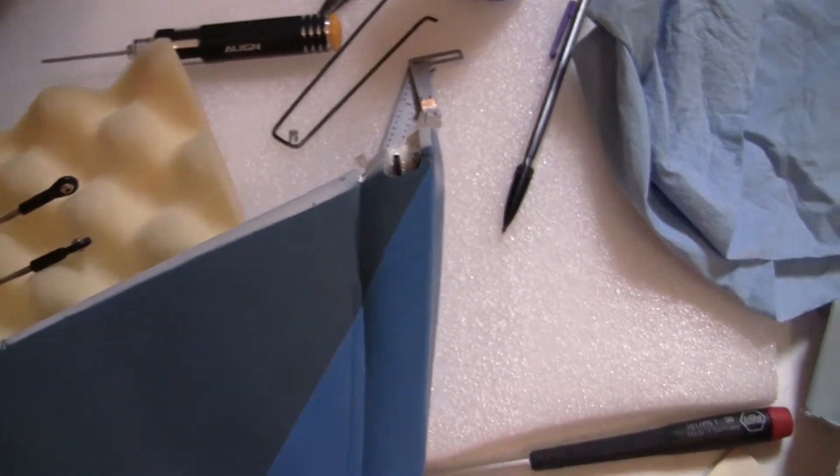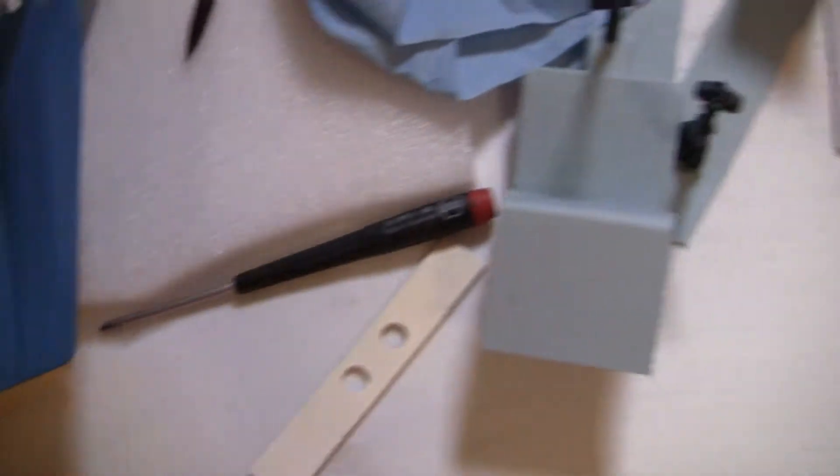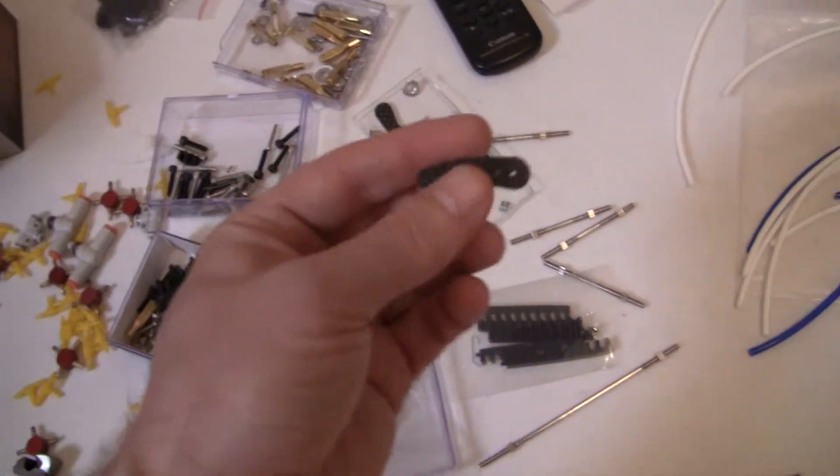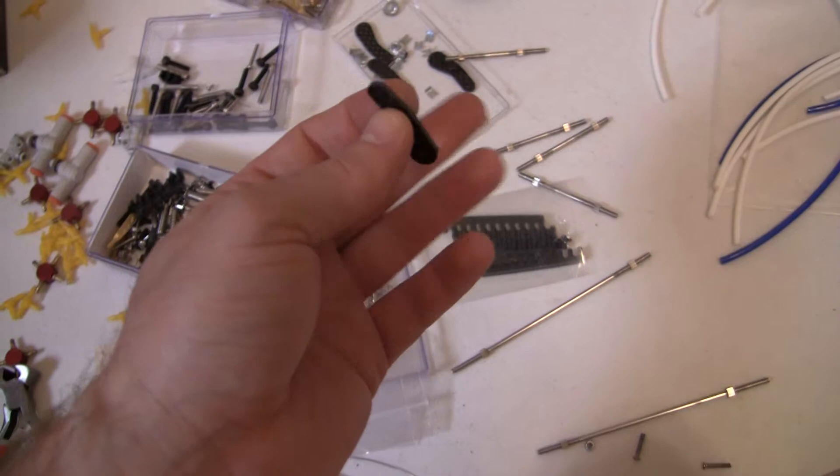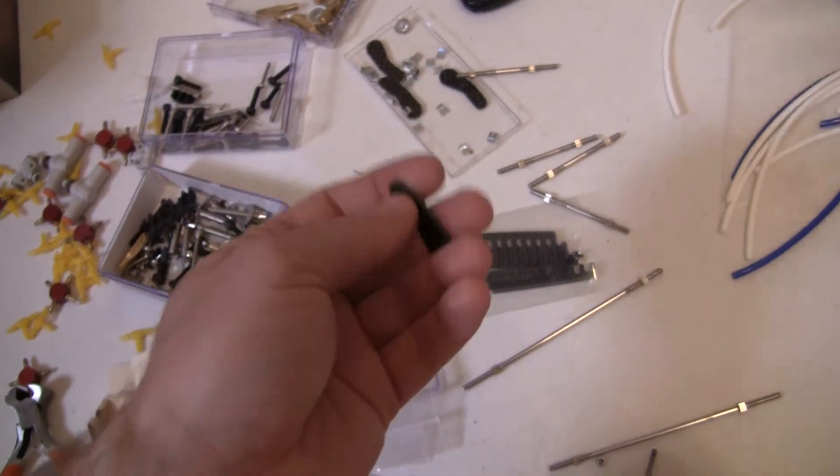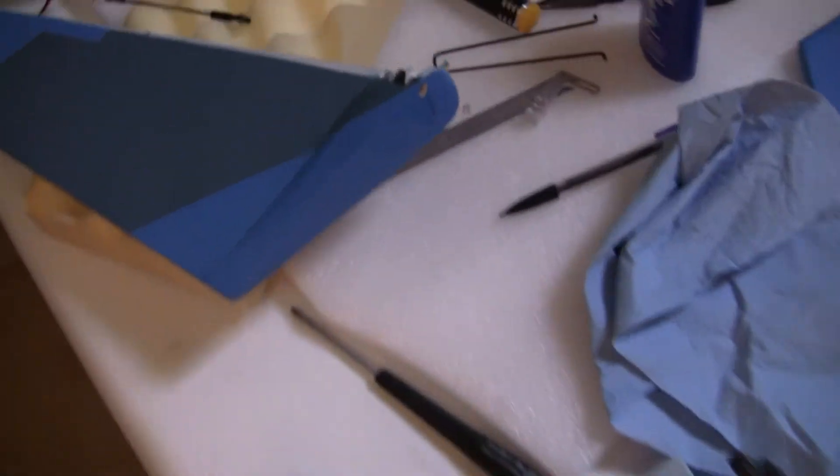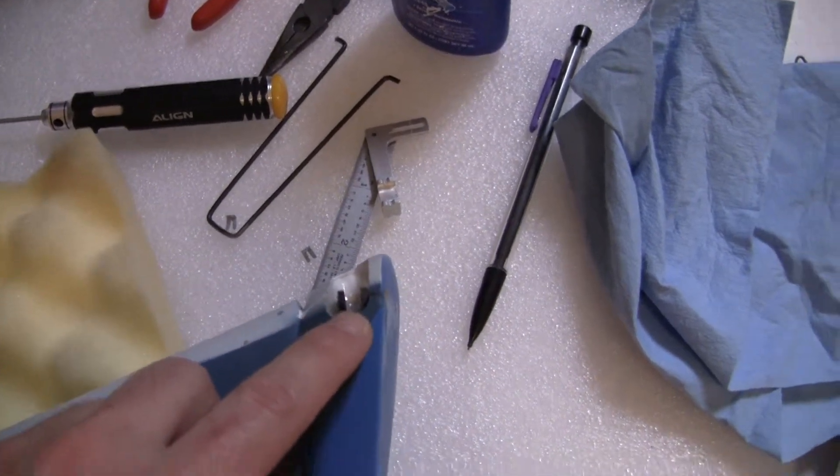Alright guys, welcome back. I wanted to show you guys these rudders. The kit comes with these carbon fiber pieces like this, and it will be two per rudder. These are actually for the leading edge slats that I have to put in, but I wanted to show you guys this because if you are not careful you can mess this up.